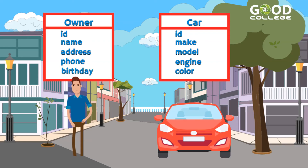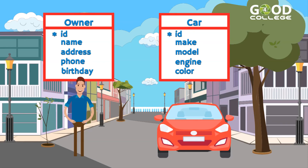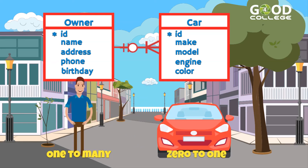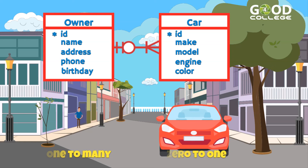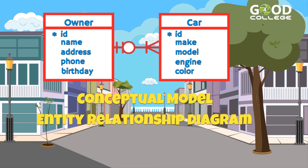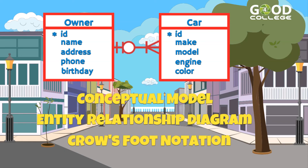The attributes are entered in the second section of the box and the id is marked with an asterisk. The business rules determine that an owner can have one car or many cars, and a car can have one owner or may still not have one. This diagram shows how a conceptual model is represented in an entity relationship diagram using Crow's Foot notation.